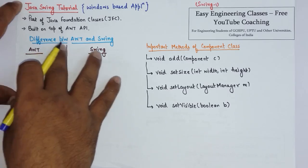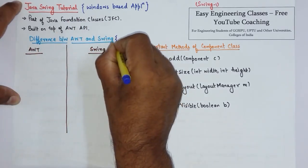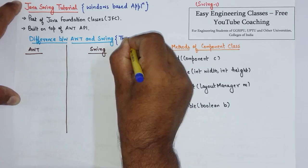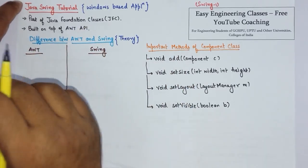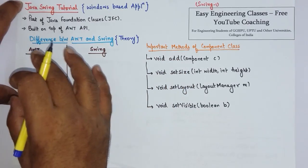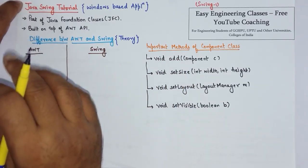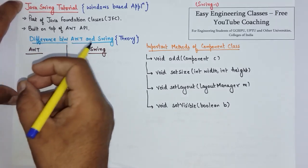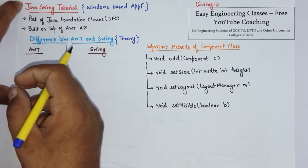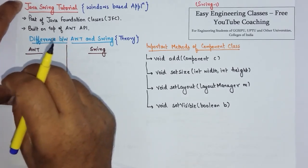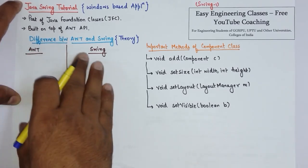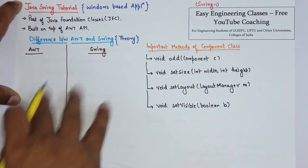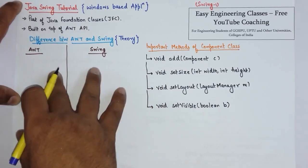The difference between AWT and Swing is very important as it is already asked in theory exams. The main difference is that AWT components like button, text field, or menu are platform dependent in their look and feel, whereas Swing components are platform independent.